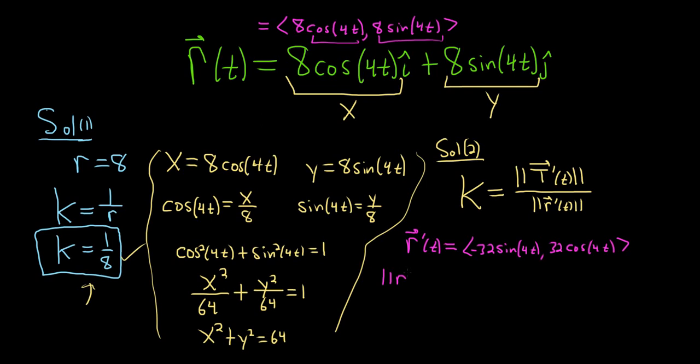We need the magnitude of this. So the magnitude of r prime of t. This is equal to the square root. And you basically just square each of the components. So you'll get negative 32 sine of 4t squared plus 32 cosine of 4t squared. So you square each piece. So you end up getting 32 squared like this. And you can pull it out.